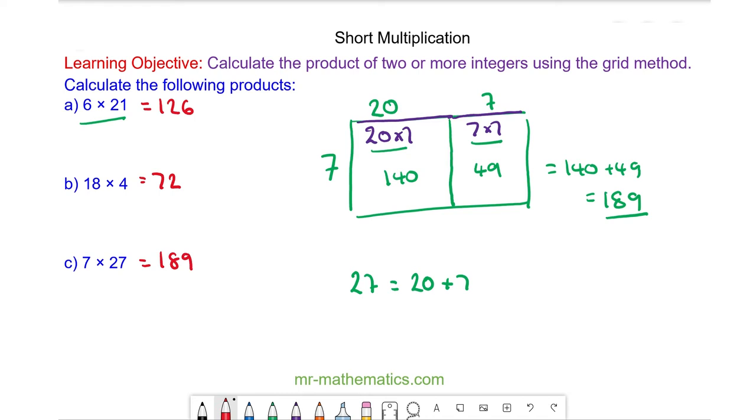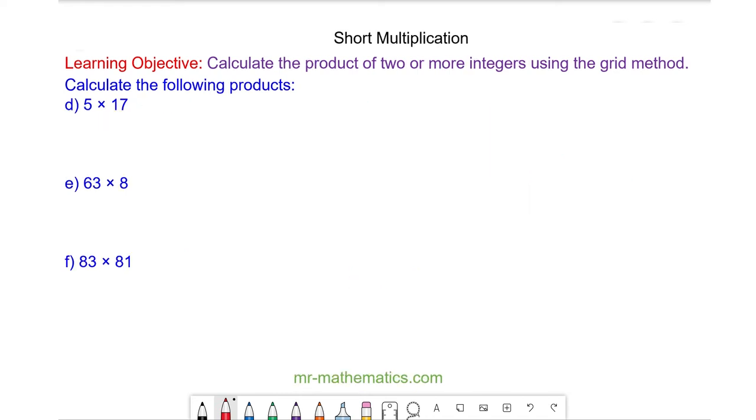Okay let's try some more questions. Do you want to try and work out questions d and e by pausing the video and you can resume it when you're ready. Okay for question d I've got 5 multiplied by 17 which is 10 and 7.